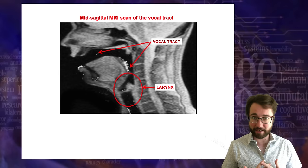In English, we have velar nasals only at the ends of syllables. In other languages, you can get the velar nasal at the beginnings of words. For example, in the Tagalog language, the word 'ŋipin' has an initial velar nasal. Another example: the Vietnamese surname spelled N-G-U-Y-E-N — the NG at the beginning spells the velar nasal, so the name is pronounced 'Nguyen.'